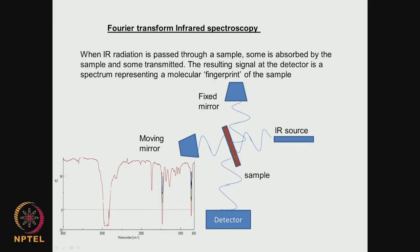In the FTIR setup, we have the sample, an IR source, a fixed mirror, a moving mirror, and a detector. A typical spectrogram has wave number in centimeter inverse on the x-axis and percentage transmission on the y-axis. We can see bands around 2900, 1700, 1400, and 700 cm⁻¹. All these bands are characteristic of a functional group.